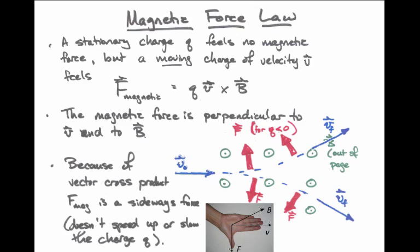Because of the vector cross product, the magnetic force is always a sideways force. It doesn't speed up or slow down the charged particle. It always makes it bend off to the side, like a centripetal force.